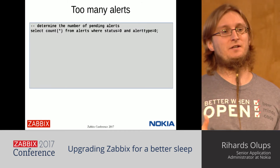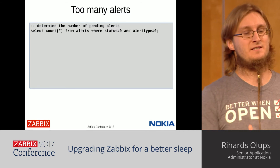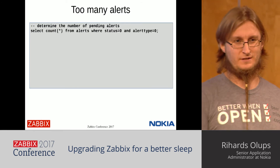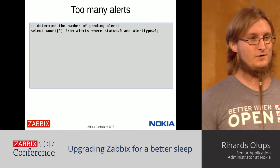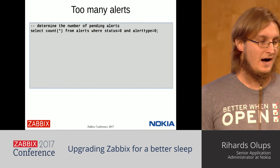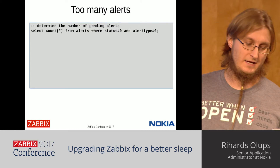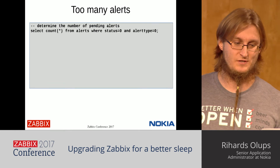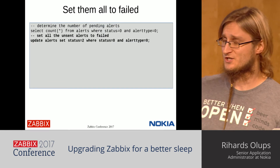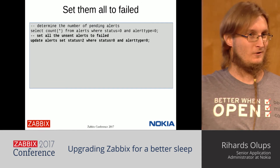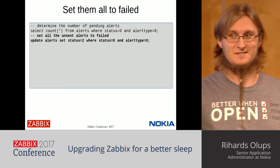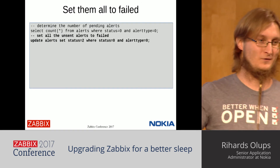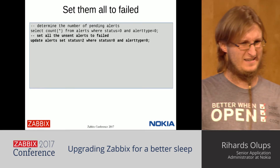What if Zabbix generates lots of alerts and is unable to send them? We had cases where thousands of alerts were queued in a pending state. You can find these by looking for status zero and alert type zero (which is messages), then changing them all to failed in the database. This is very helpful if things go really south, though it may work differently in 3.4.